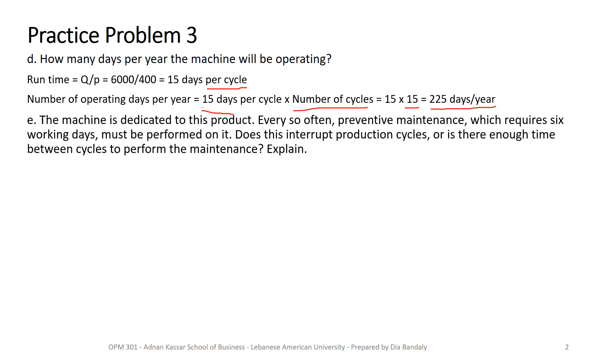Part E. The machine is dedicated to this product. So we use this machine only for that product. Now, as you know, in any production plants, when you rely on machineries, you need to do some preventive maintenance. Preventive maintenance is you do some maintenance, not because there was a breakdown in the machine, but just to avoid any breakdown. So this preventive maintenance requires six working days. Now the question is, would this interrupt the production cycle? So let's see, how can we answer this question?